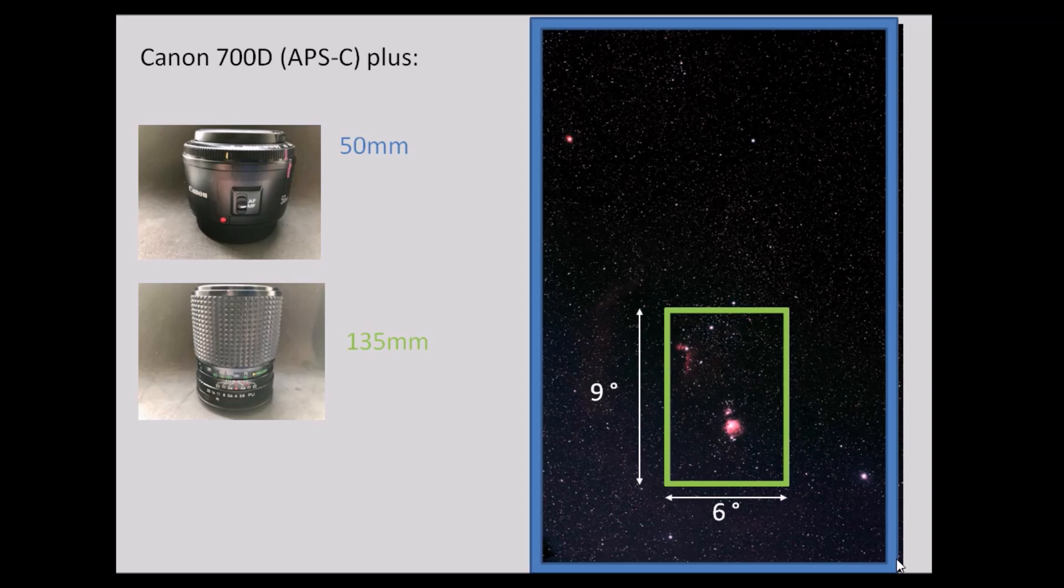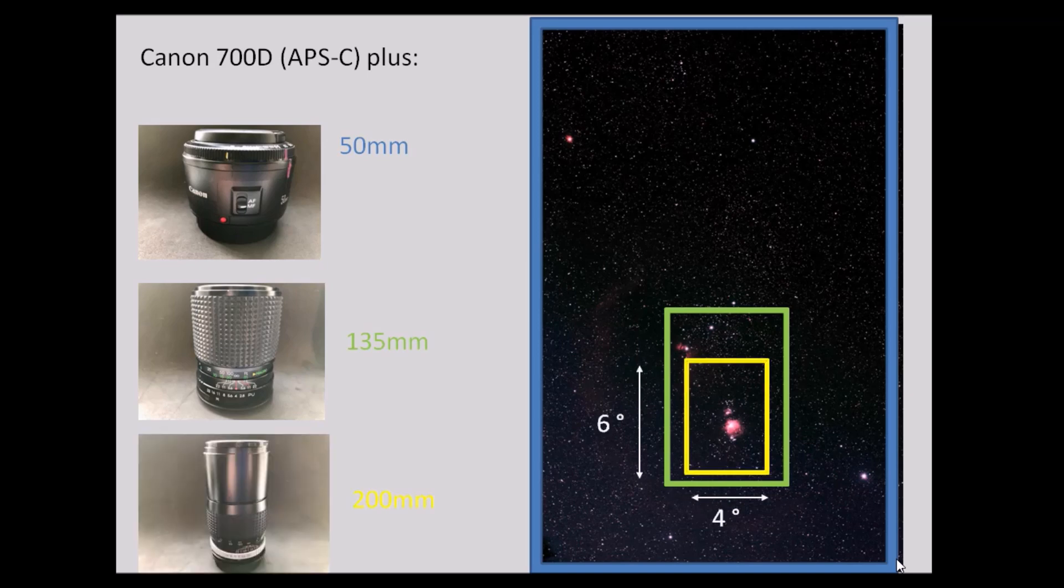If we move on to the 135mm lens, then this is the region you can see. Around 9 degrees by 6 degrees. And it's enough to capture the area of Orion's belt down to Orion's sword. And then finally, for the 200mm lens, as you'd expect, a correspondingly smaller area again. This time around 6 degrees by 4 degrees.